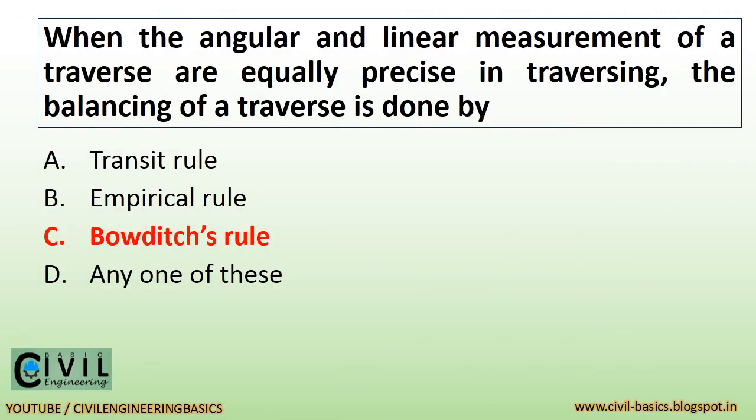When the angular and linear measurement of a traverse are equally precise in traversing, the balancing of a traverse is done by Bowdich's rule.